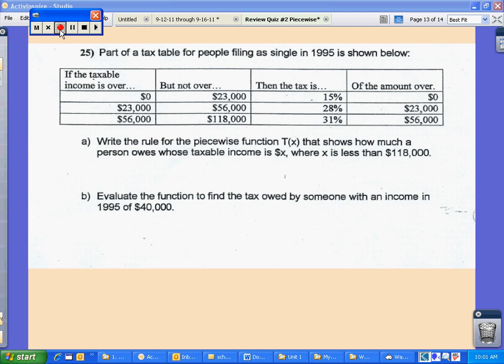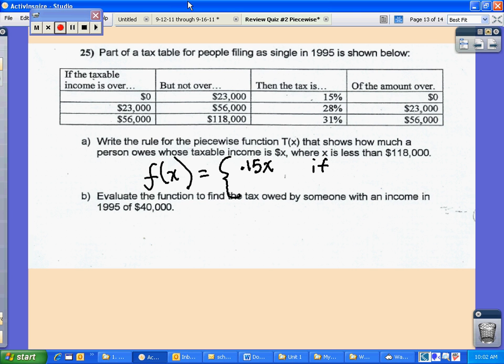Okay, so for number 25, then you want to write the rule. So f of x. You want it between $0 and $2,300. So your tax is going to be 15%, which is 0.15x. And then that's if. Oh, no, this is wrong. I'm just going to see the next video for number 25.